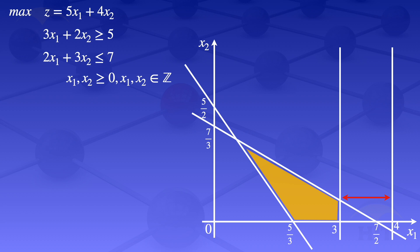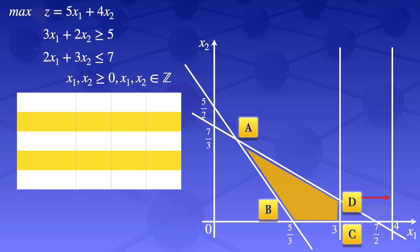The corner points of the new feasible region are A, B, C, and D. Both C and D lie on the line x1 equals 3. We evaluate the objective function at these corner points. At point A: x1 equals 1/5, x2 equals 11/5, and z equals 49/5. At point B: x1 equals 5/3, x2 equals 0, and z equals 25/3.